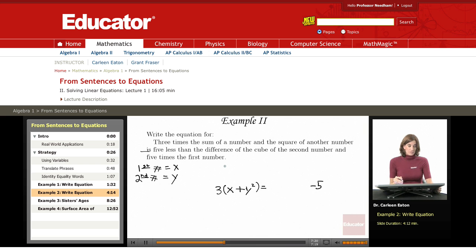So I have my minus five, and now I need to figure out what I'm supposed to be subtracting five from. I'm subtracting it from the difference of the cube of the second number, so the difference between two terms. And one term is the cube of the second number. The second number is y, so y cubed, and they want the difference. So y cubed, and five times the first number.